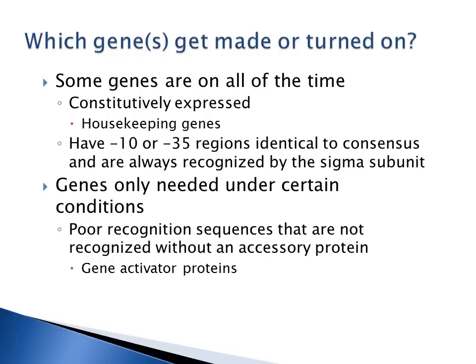Some genes in the cell are on all the time — these are called constitutively expressed genes, usually housekeeping genes that are absolutely essential for cell function. Constitutively expressed genes have minus 10 and minus 35 regions that are identical to the ideal consensus sequence and are always recognized by the sigma subunit. However, other non-housekeeping genes are only needed under certain conditions and usually have poor recognition sequences that aren't recognized by the sigma subunit without an accessory protein.